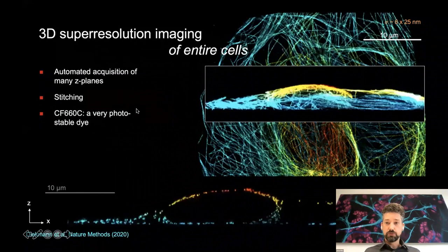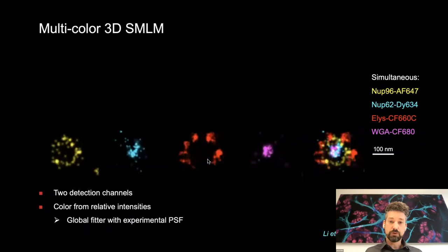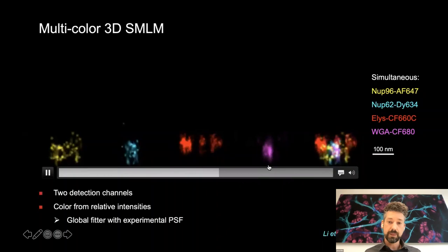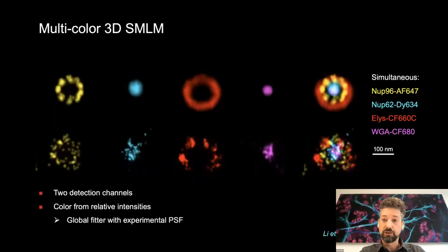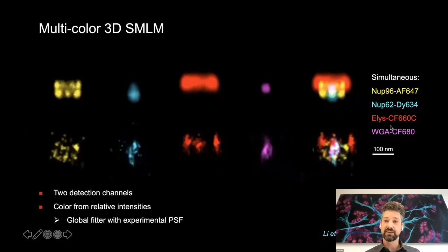We can now achieve such resolution not only in one color but in up to four colors simultaneously. Here you see a single nuclear pore complex with four of its components labeled, and above it an average calculated from about 200 such nuclear pores. We do this with only two detection channels and four fire dyes: by looking at the intensity ratios of individual fluorophores in these channels, we can assign the color.